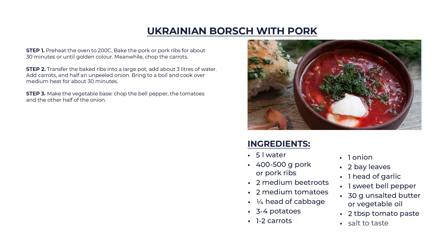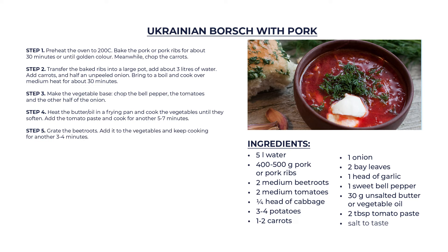Step 3: Make the vegetable base. Chop the bell pepper, the tomatoes, and the other half of the onion. Step 4: Heat the butter or oil in a frying pan and cook the vegetables until they soften. Add the tomato paste and cook for another 5 to 7 minutes. Step 5: Grate the beetroots. Add them to the vegetables and keep cooking for another 3 to 4 minutes.